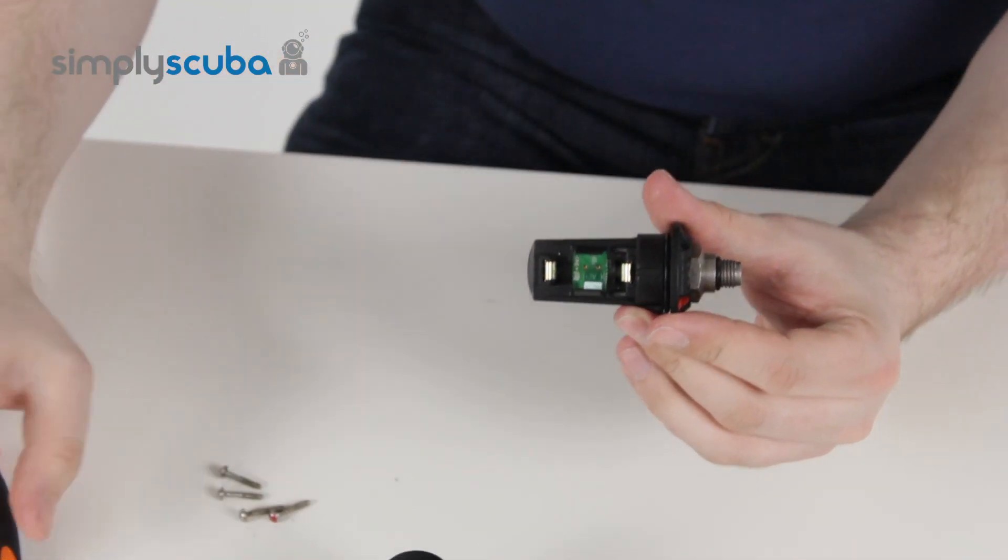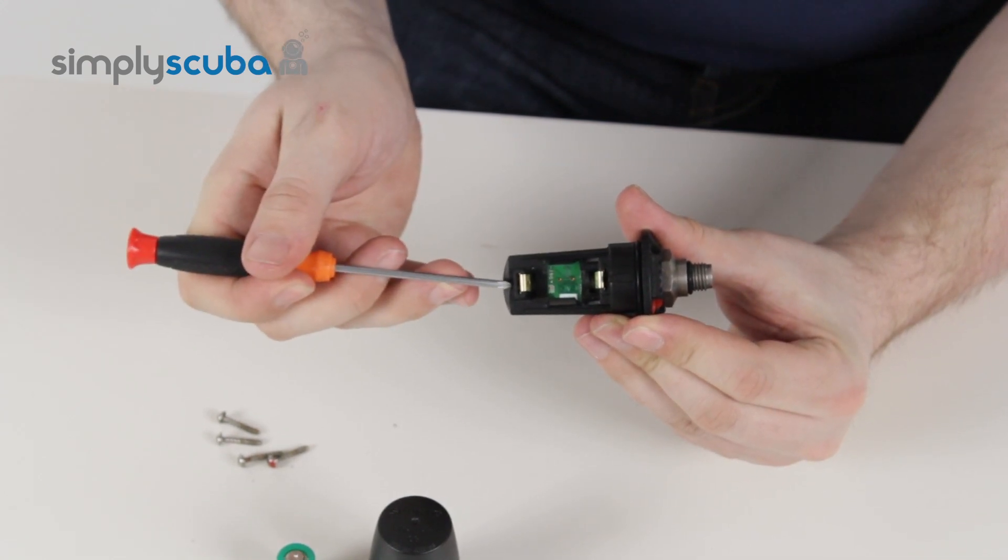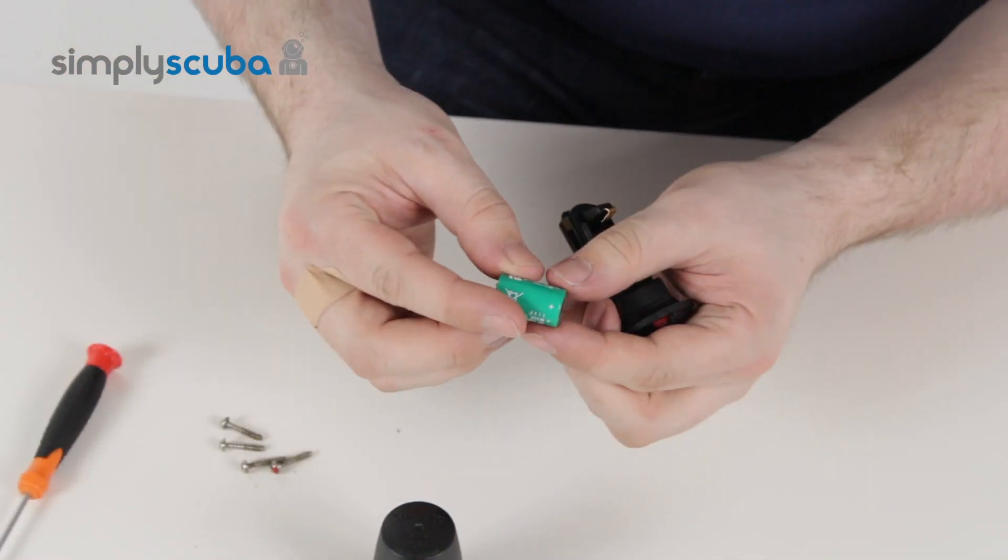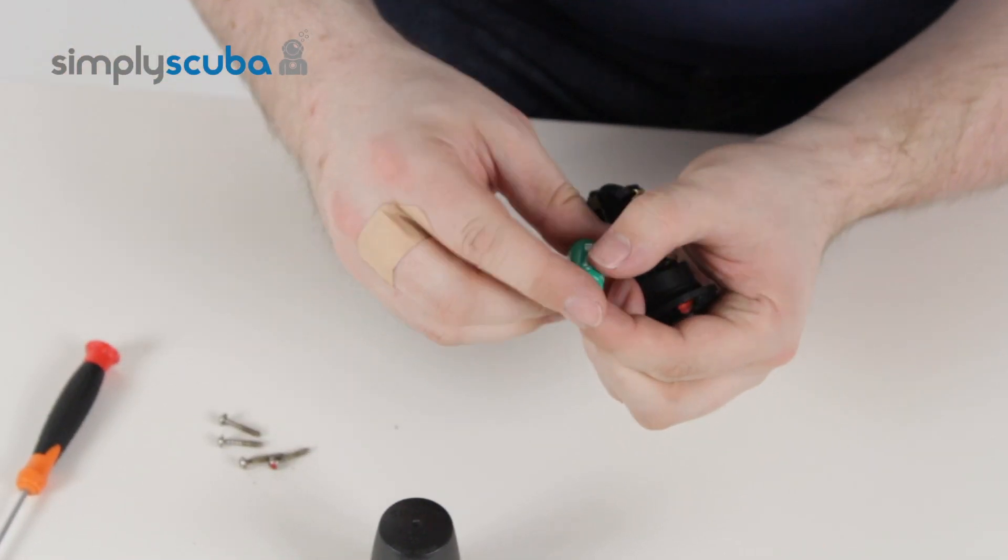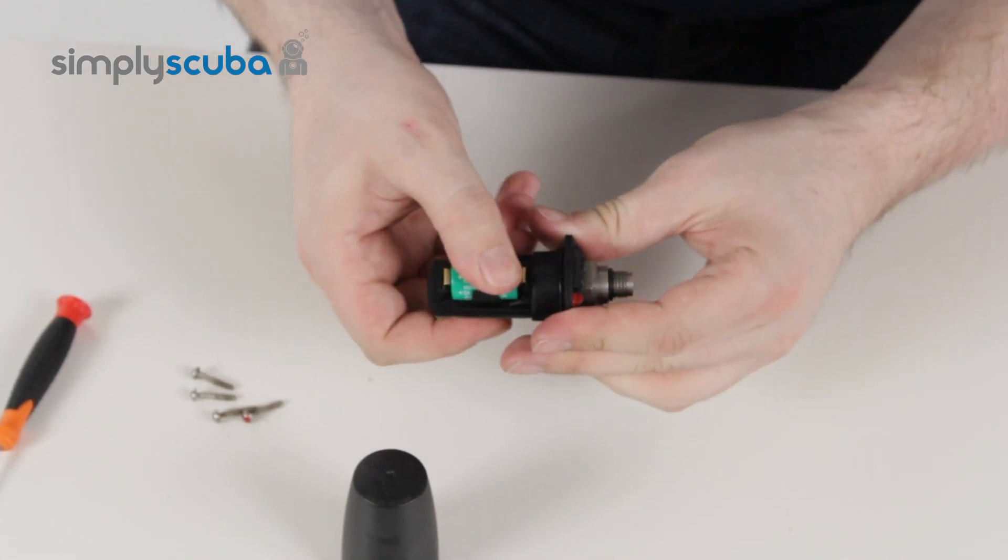With the battery, on the inside here it tells you to put the positive towards this end, towards the tip of the transmitter. So on the battery you have a little plus, and you want to turn that in that direction, and then simply push it into position. And that's it.